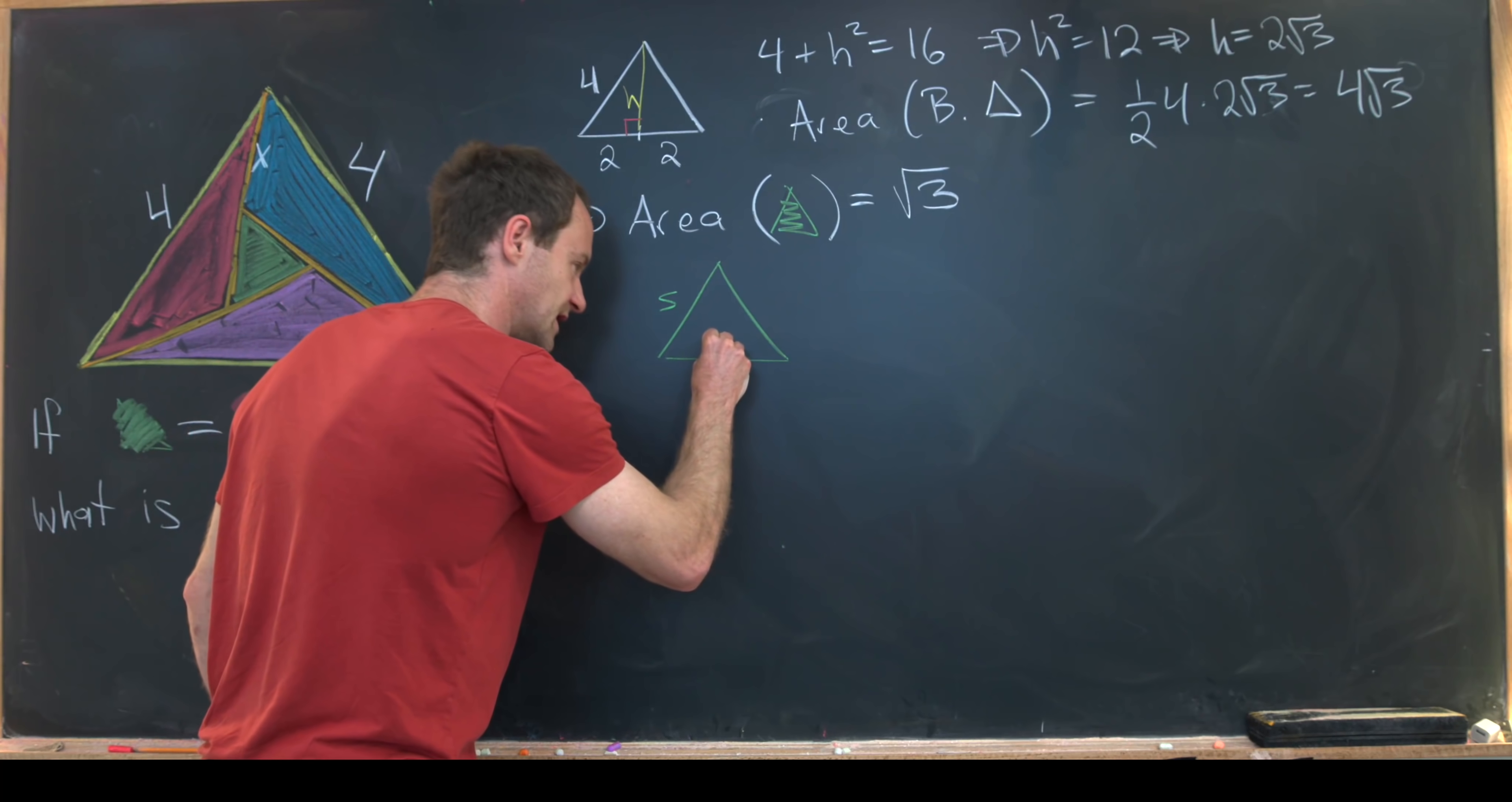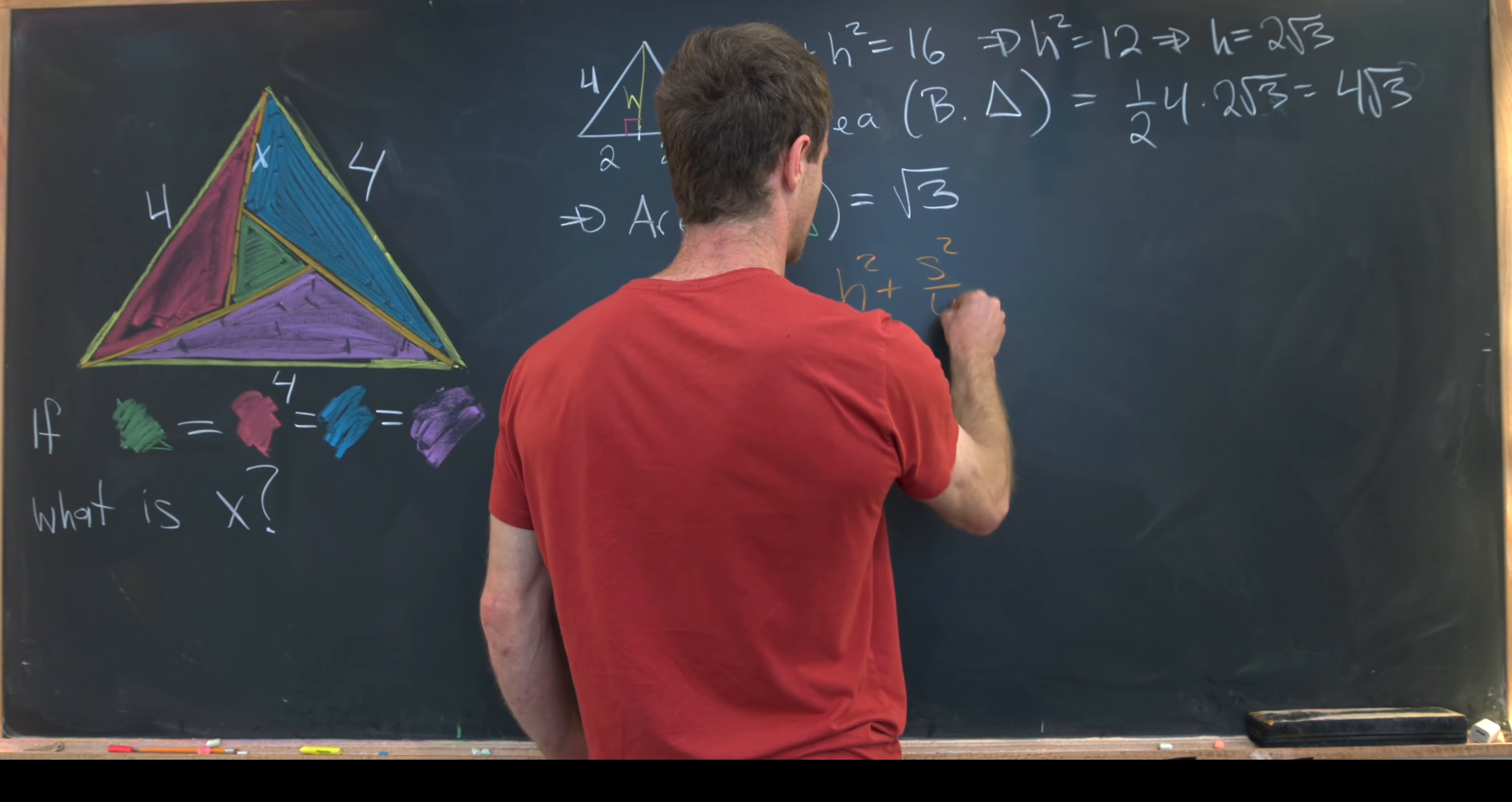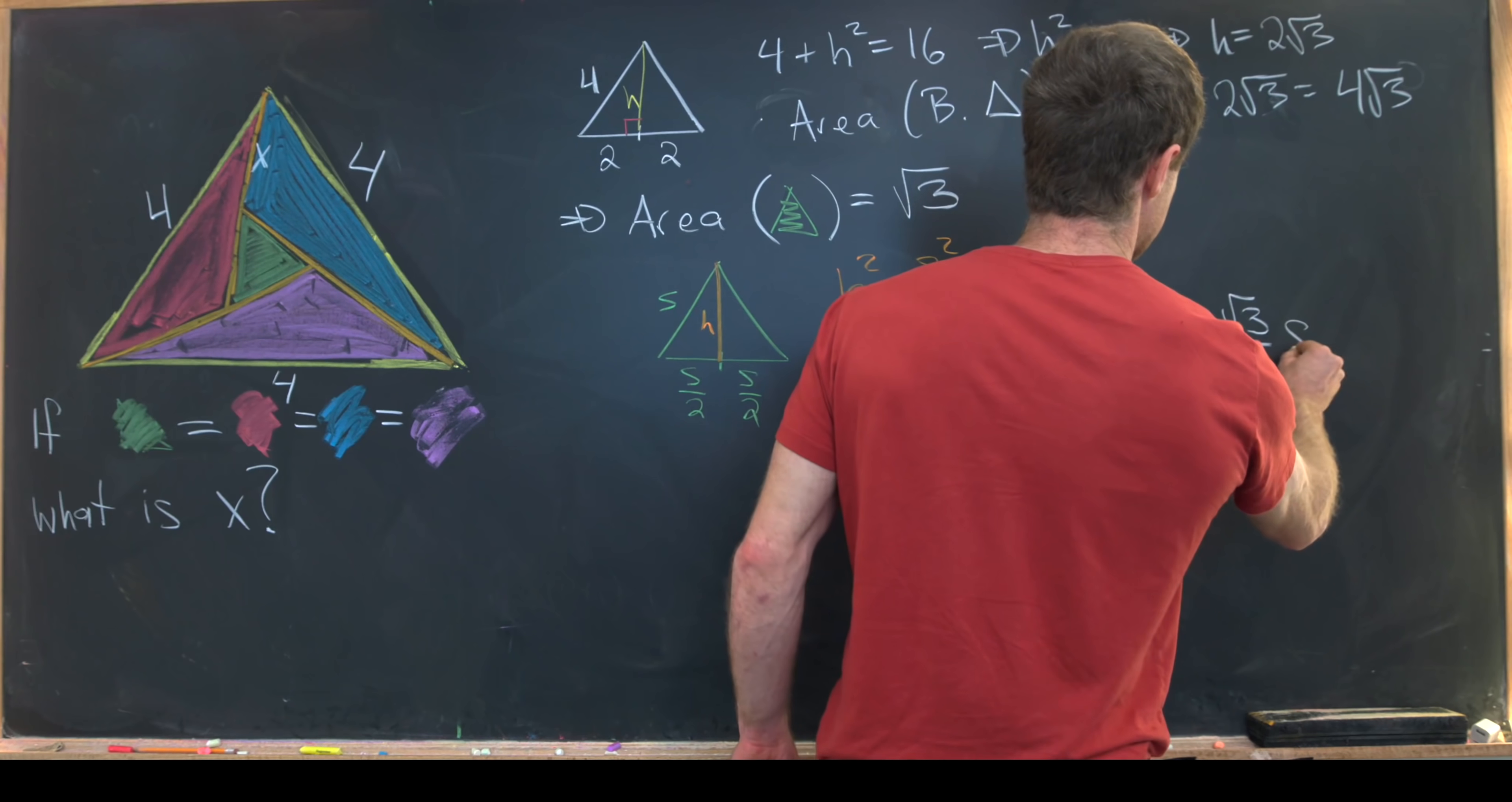Well, then that means we can break this bit down here into s over 2 and s over 2, use the same trick where we drop a height like that, and then calculate the area using the Pythagorean theorem first. So let's notice we know that h squared plus s squared over 4 is equal to s squared. So again, that's just by the Pythagorean theorem. That tells us that h squared is equal to 3 s squared over 4, which means h is equal to the square root of 3 over 2 times s.